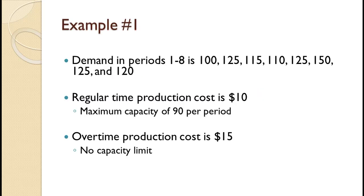In this first example, demand for periods 1 through 8 is 100, 125, 115, 110, 125, 150, 125, and 120, for a total of 970. Regular time production costs are $10 and the maximum capacity in any period is 90. Overtime production cost is $15 and there is no practical limit on overtime capacity. Prepare an aggregate plan.